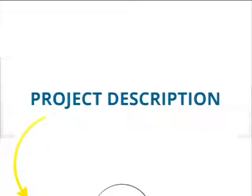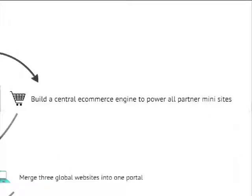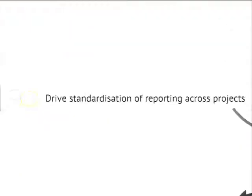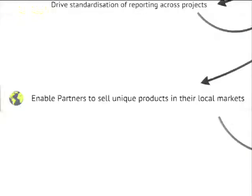To give you an idea of the project description — or the impossible task we gave PK and LiveLink — we said we need to create a consistent digital presence to elevate the brand of Manchester United Soccer Schools. It needs a central e-commerce engine that can roll out to each individual partner site with individual products. That would help drive standardization across reporting, giving us one single central view. We also had three global sites that needed to be merged, since it made no sense to fragment the traffic. We needed to enable partners to sell unique products in each local market, reflecting cultural differences and the needs of footballers in those countries.